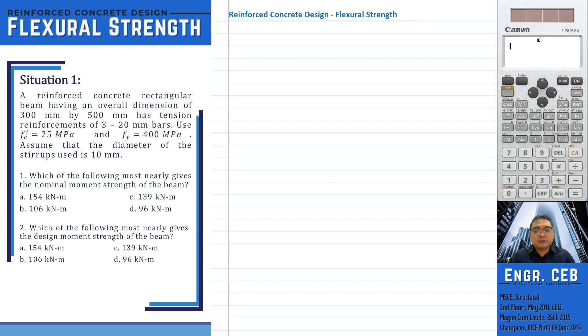A reinforced concrete rectangular beam having an overall dimension of 300 by 500 has tension reinforcements of 3, 20 millimeter bars. So let us draw the given beam. Its width is 300 and its overall depth is 500. It has three 20 mm tension bars. Let's say the tension side is at the bottom of the beam.